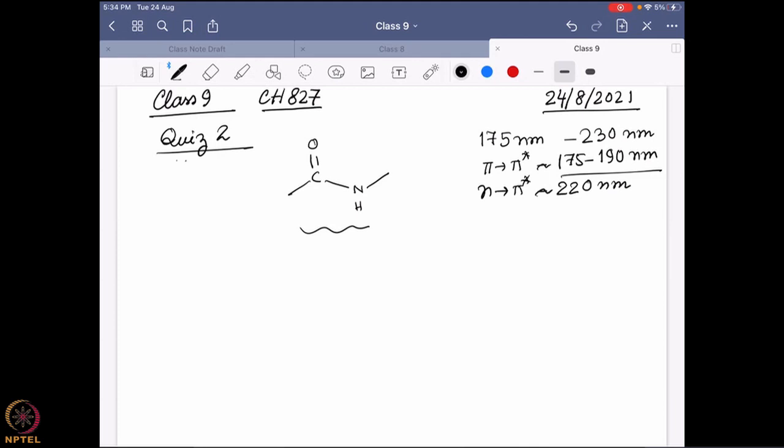n to pi star transition actually occurs around the region of 220 nanometer. So these figures I'm saying are kind of the central part of the absorbance band maximum. So when you look into a CD graph and how it actually looks like, we can see that for alpha helix it has a band structure like this, but these are actually coming at 208 nanometer, 222 nanometer, something around that region.